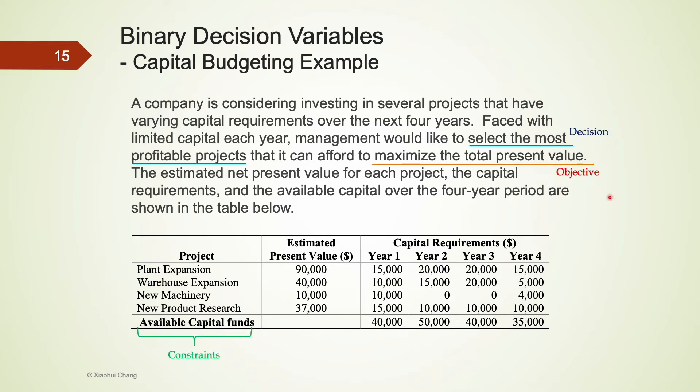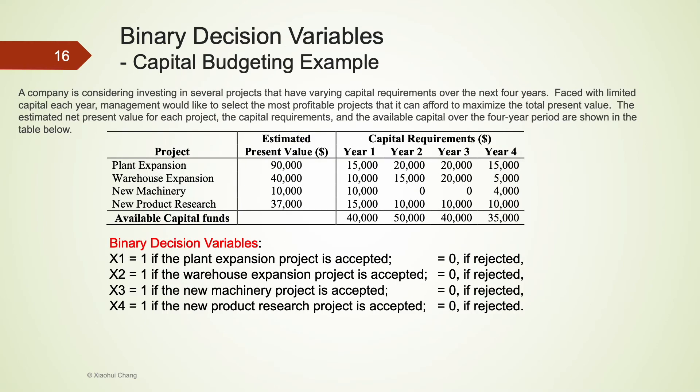I underlined some of the information on this slide. This is a rather standard linear programming problem that you have seen earlier in this class. The only tricky part is the decision variables. The company has to consider which projects to invest in, meaning they would make four yes or no decisions. Should they invest in plant expansion? Should they invest in warehouse expansion, new machinery, or new product research?